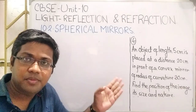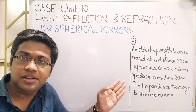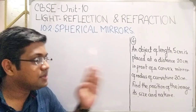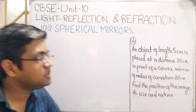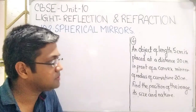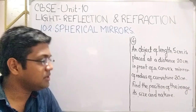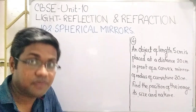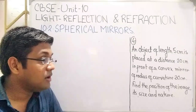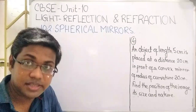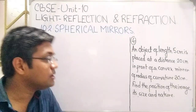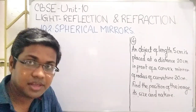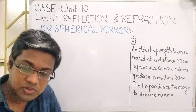This is problem number 14 of the density exercise, chapter number 10. An object of length 5 cm is placed at a distance 20 cm in front of a convex mirror of radius of curvature 30 cm. We need to find the position of the image, its size and nature.